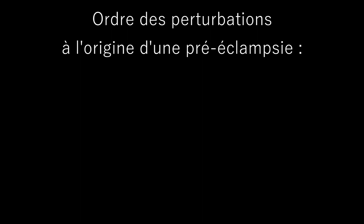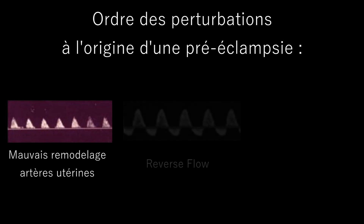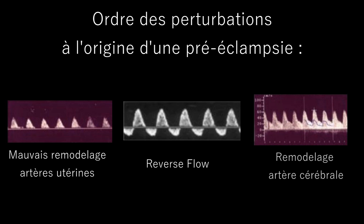Pour résumer, voici l'ordre des perturbations en cas de mauvaise invasion trophoblastique, pouvant être à l'origine d'une pré-éclampsie, c'est-à-dire une hypertension artérielle gravidique durant la grossesse. Une mauvaise invasion va induire un mauvais remodelage vasculaire des artères utérines, qui lui-même induira des résistances placentaires à l'origine d'un reverse flow au niveau des artères ombilicales. L'artère cérébrale du fœtus subira un remodelage en dernier lieu, en cas de grande souffrance fœtale.